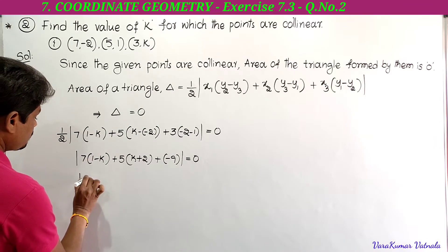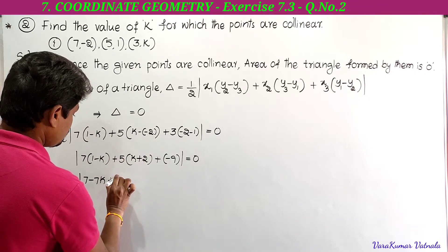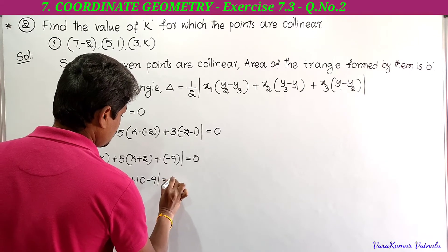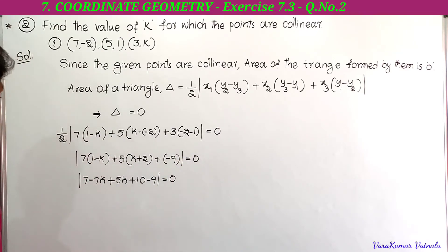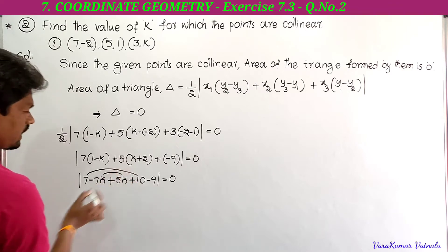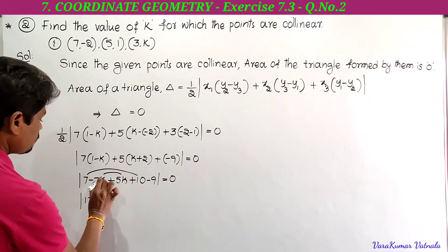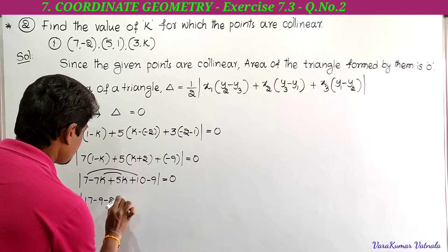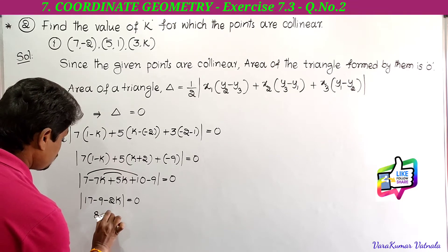Expanding: 7 into 1 is 7, 7 into -k is -7k. Next, 5 into k is 5k, 5 into 2 is +10. Then -9. So combining constants: 7 + 10 is 17, then minus 9. And combining k terms: -7k + 5k is -2k. So 17 - 9 - 2k equals 0.